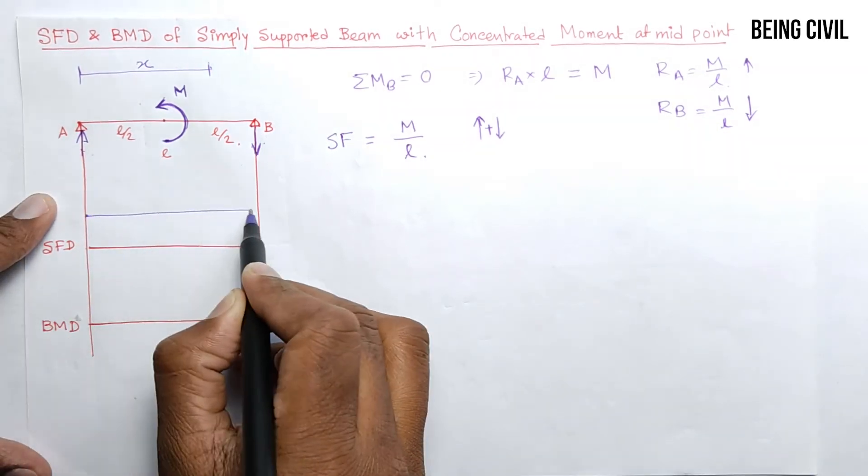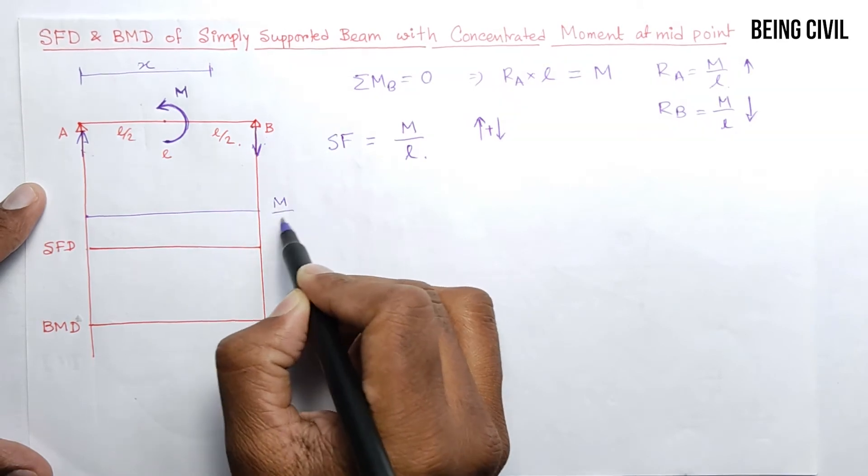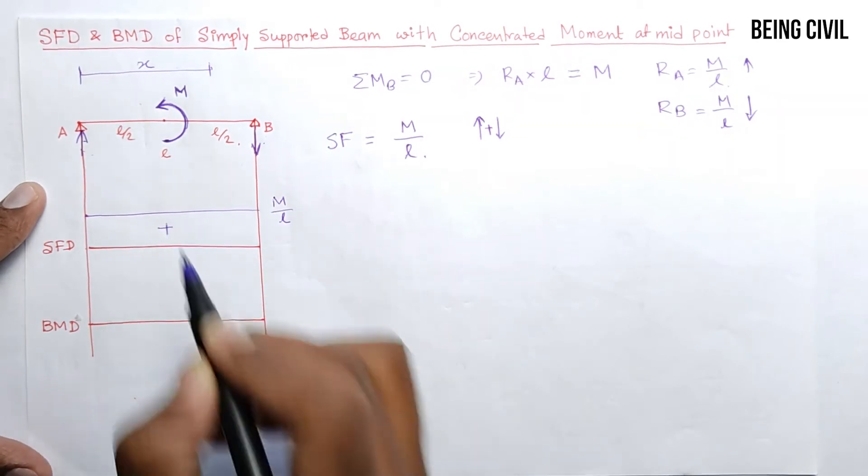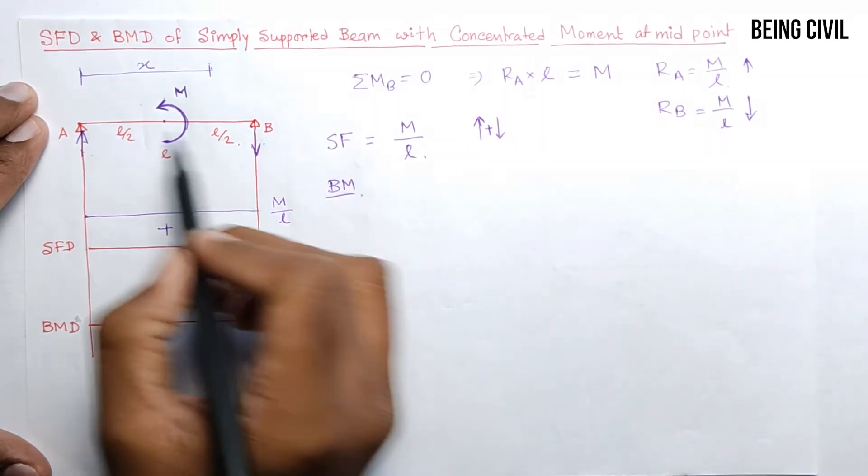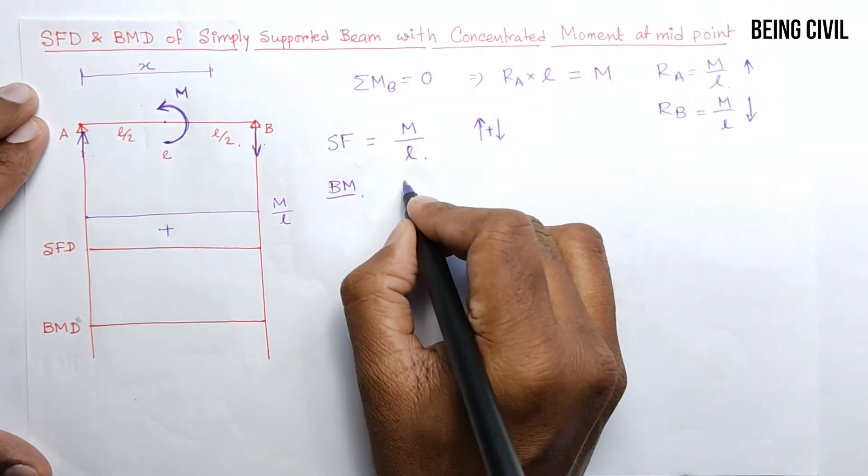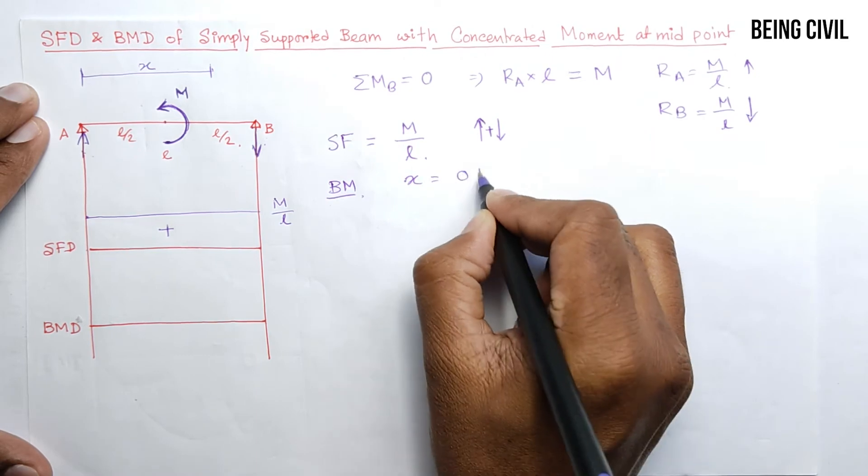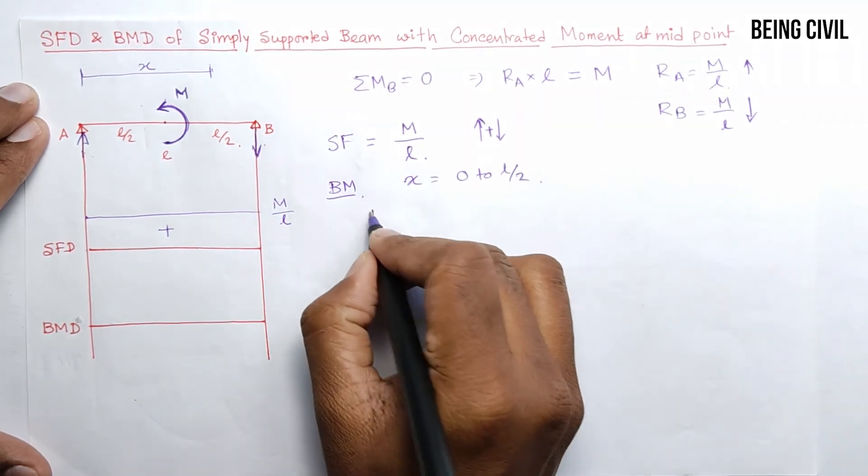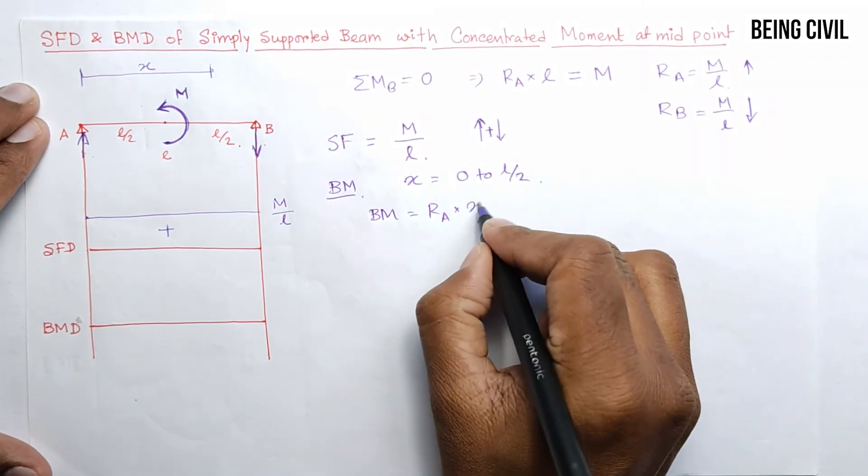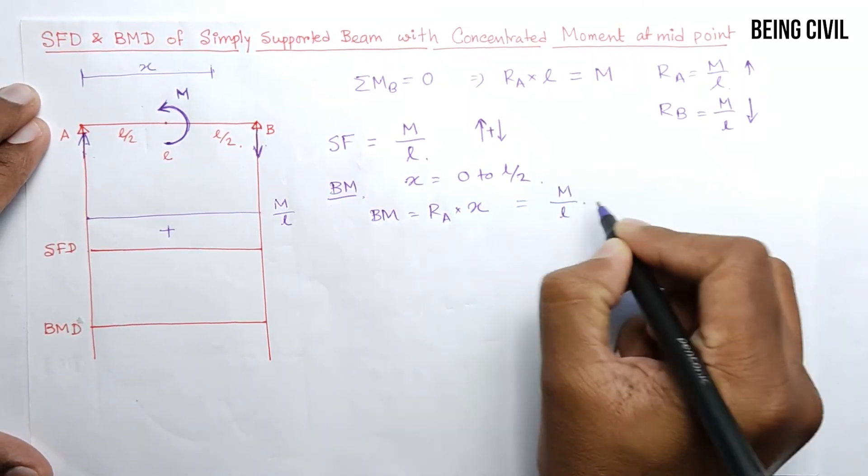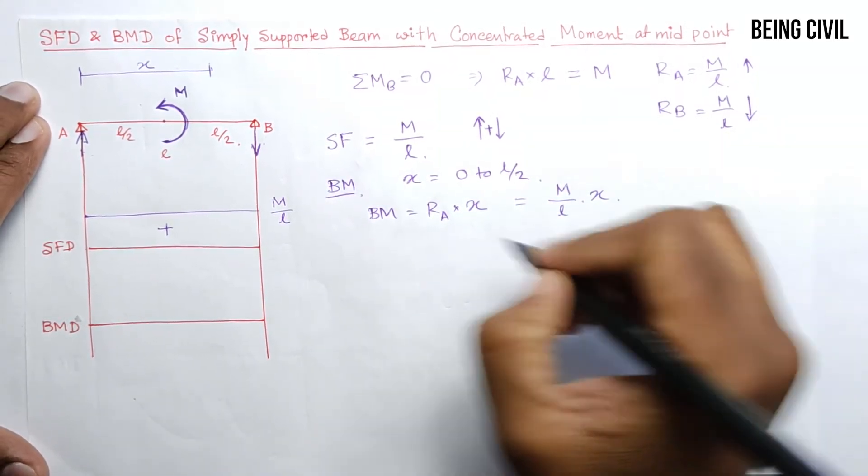Now coming to the bending moment diagram for the left half of this beam, where X equals 0 to L/2, the bending moment is this force RA into the distance X, so M/L into X. You see this moment is sagging in nature, so this is a positive bending moment.